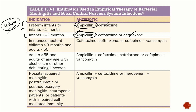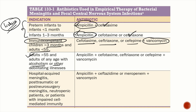For immunocompetent children over three months of age and adults under 55 years with no other risk factors, give cefotaxime, ceftriaxone, or cefepime plus vancomycin. For adults over 55 years of age or those with alcoholism or other debilitating illness, add ampicillin to cover Listeria.